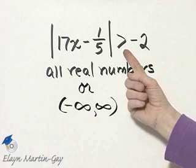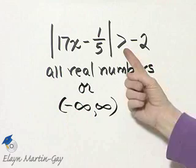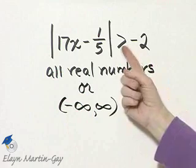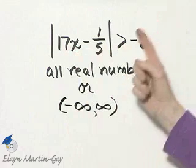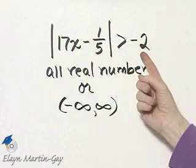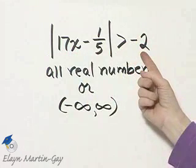Now by the way, if this were a less than sign, less than negative 2, absolute value is always non-negative. It would never be less than negative 2. So the answer then would be the empty set.